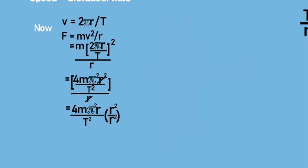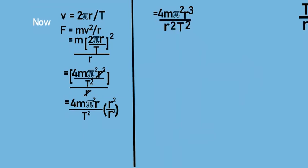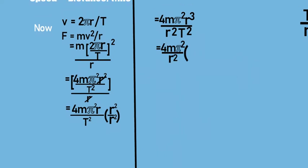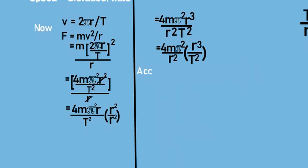And ultimately, we will get 4mπ² × r³/T² × 1/r². We just simply separate this r³/T² to use Kepler's third law. Now, we know that T²/r³ is K. So r³/T² will be 1/K.